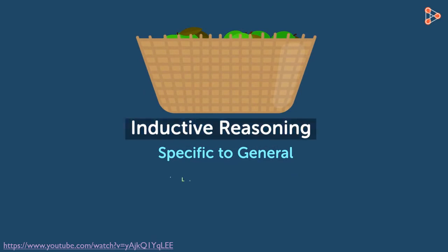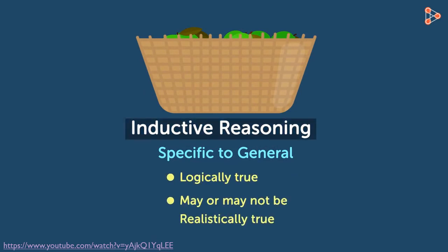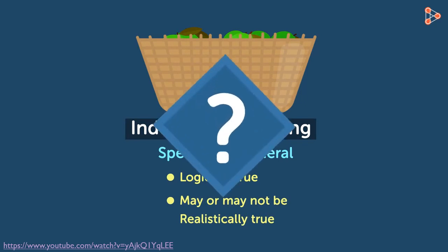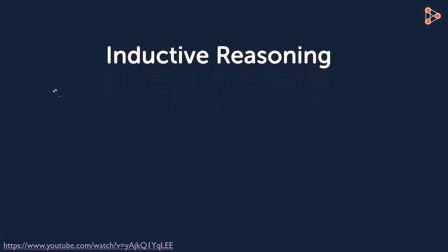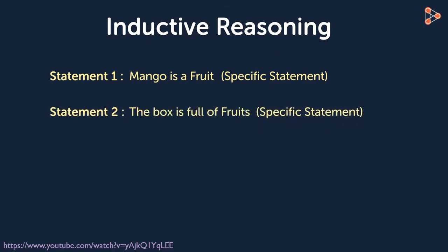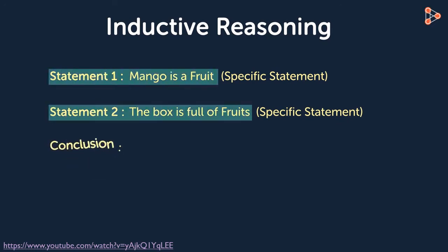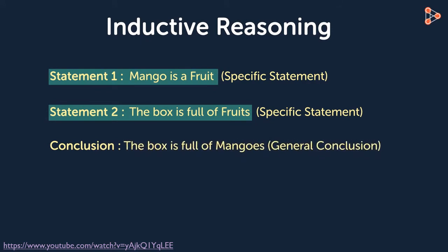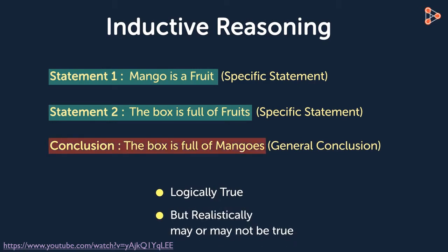Inductive reasoning is logically true but may or may not be realistically true. For example, Statement 1 says the mango is a fruit; Statement 2 says the box is full of fruits. We draw the conclusion that the box is full of mangoes. Statements 1 and 2 are true, but the conclusion, although logically true, can be false if the basket contains any other fruit apart from mangoes. It's logically true but not definitely true.